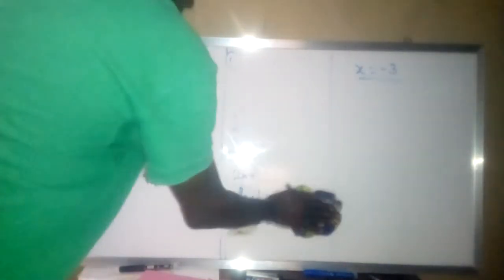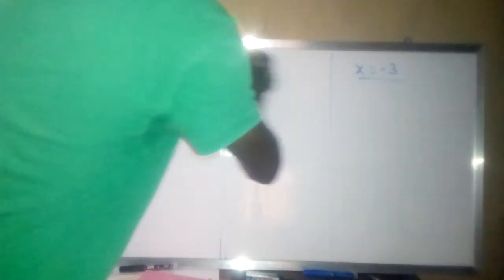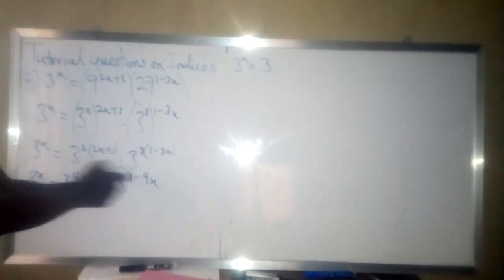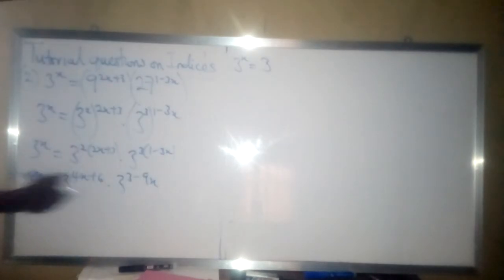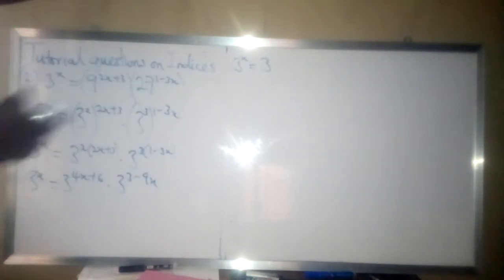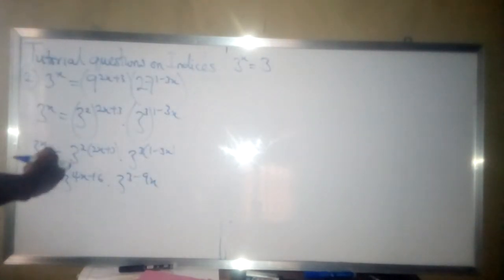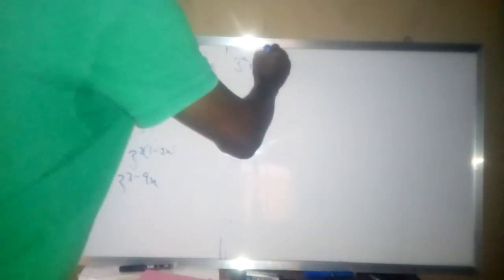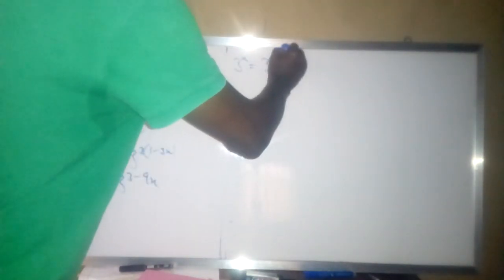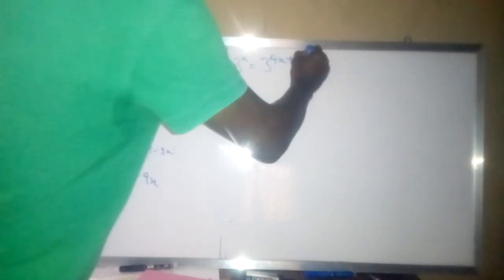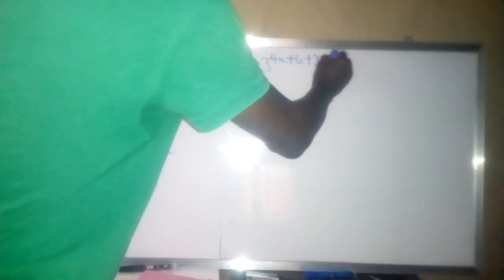So now we have 3 raised to power x is equal to, if you pick one 3, then we add the powers together because we are multiplying them. And then whenever you are multiplying two index numbers in indices, you add the powers together. So 4x plus 6 plus 3 minus 9x.